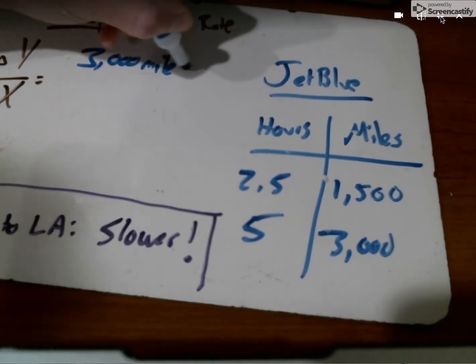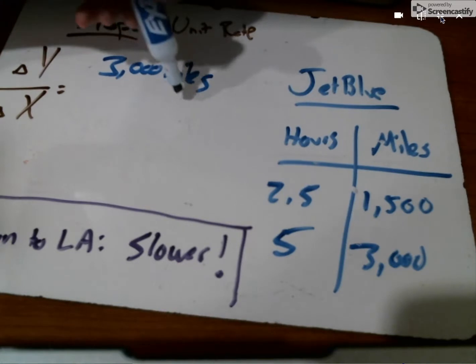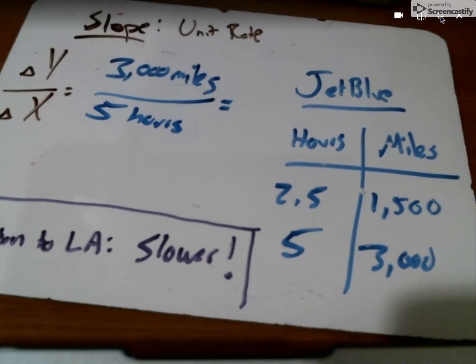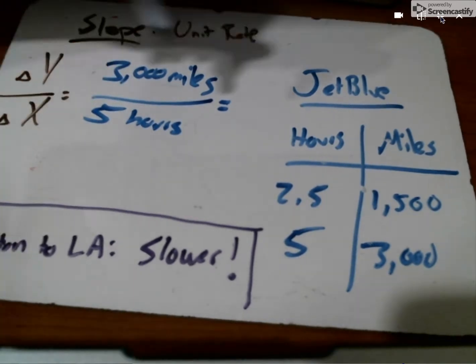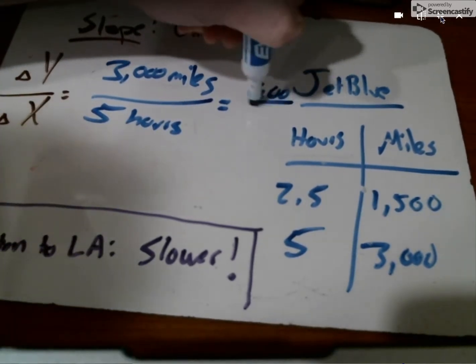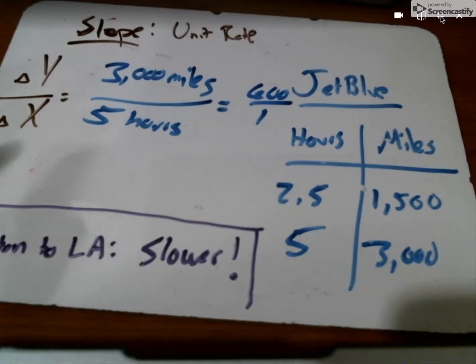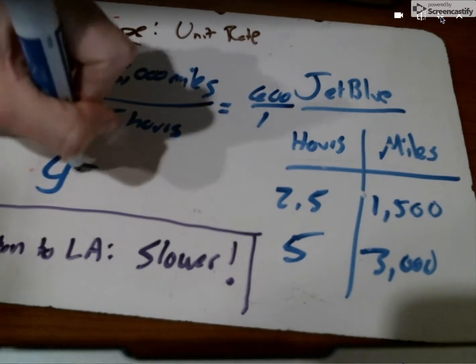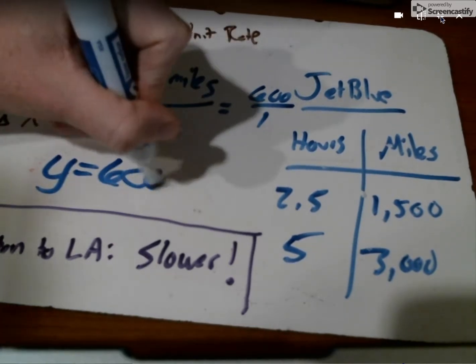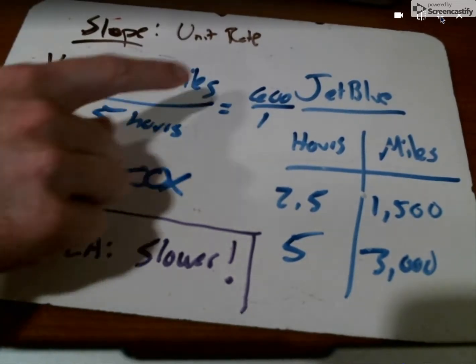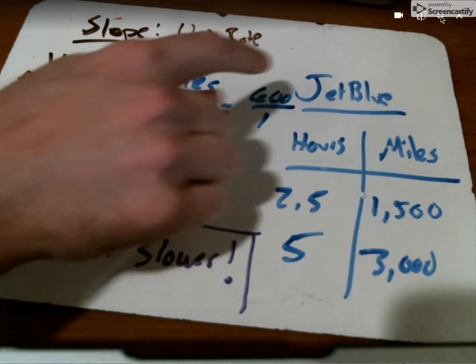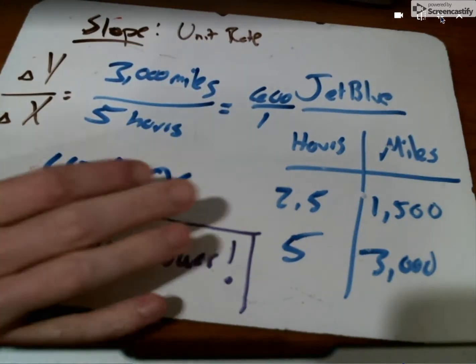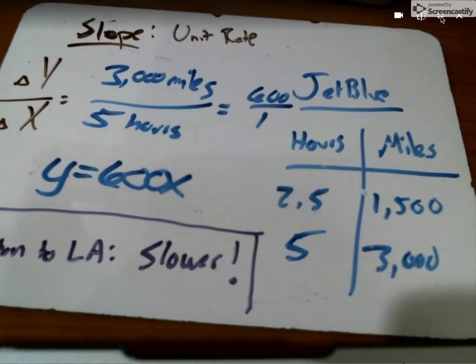3,000 miles divided by the 5 hours. And if I know that 30 divided by 5 is 6, I know that 3,000 divided by 5 is going to be 600 over 1. So if we wrote an equation, we could say y equals 600x. Because every 1 hour, this plane's going 600 miles. So the 600 miles would multiply with the number of hours x, and that would equal your distance.